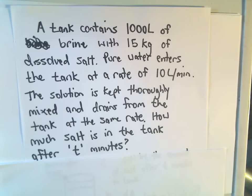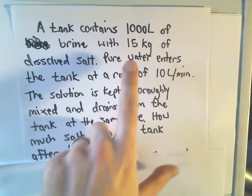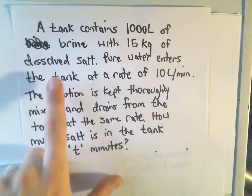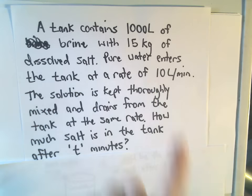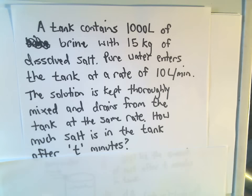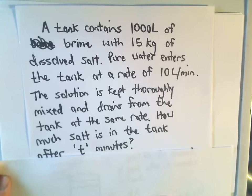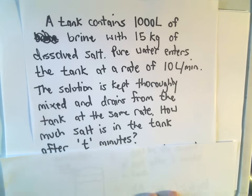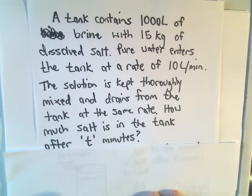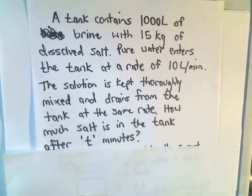Okay, so in this problem we've got a tank. It contains a thousand liters of brine. So all brine means in this case is we've got a salt water mixture. Total, if we could just kind of take all the salt out and weigh it, there's 15 kilograms of dissolved salt in that tank. Okay, so maybe we're flushing out the tank. Pure water is entering the tank at a rate of 10 liters a minute. We're keeping the tank thoroughly mixed and it drains from the tank at the same rate. So it's coming in at 10 liters a minute, it's going to be going out at 10 liters a minute. And we want to know how much salt is in the tank after t minutes in this problem.